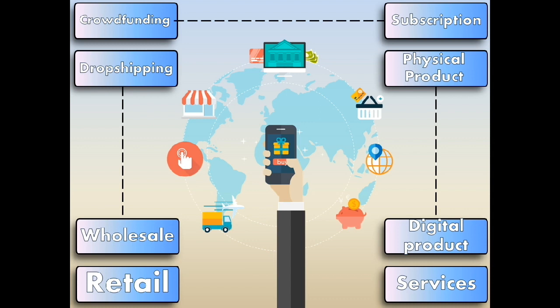Fifth is Subscription — the automatic recurring purchase of a product or service on a regular basis until the subscriber chooses to cancel. Sixth is Physical Products — any tangible good that requires inventory to be replenished in order to be physically shipped to a customer as sales are made. Seventh is Digital Products — downloadable digital goods, templates, courses, or media that must be purchased for consumption or licensed for use. Eighth is Service — a skill or set of skills provided in exchange for compensation, where the service provider's time can be purchased for a fee.